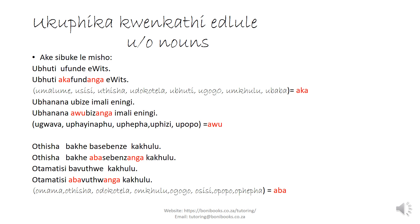Now we will look at ugupiga wenkati elule — how do we do the negatives? We look at the nouns in groups. For example, umushawato kalu: utuputi ufunde evets. The negative will be uputi aga fundanga evets. We say aga because this is the OO group. So ufunde becomes aga fundanga.